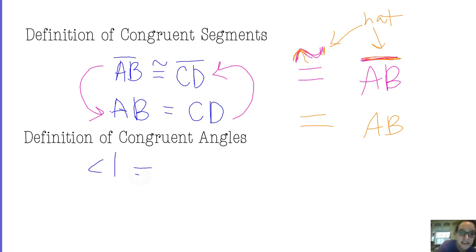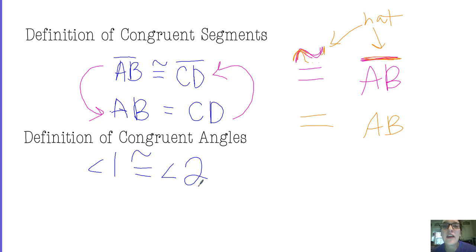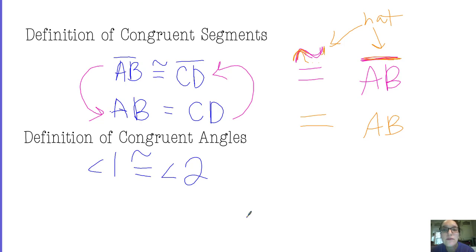If angle 1 is congruent to angle 2, that angle is congruent to another angle. But if we're ever talking about an angle having a certain number of degrees — a measure — the measure of the angle refers to how many degrees are in that angle. Whenever there's an equal sign, whenever you're setting up an equation, you wouldn't use a congruent symbol; you use an equal sign. It's not that the angles are equal to each other — it's that the measures of the angles are equal to each other.